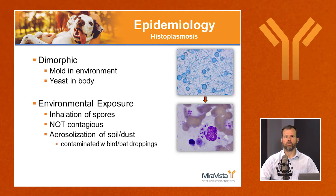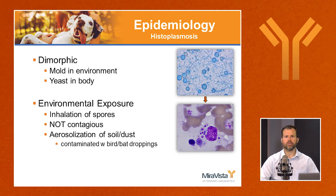Histoplasmosis is a dimorphic fungal organism. It is a mold in the environment and a yeast in the body, and it is not contagious — it's an environmental exposure. Those small spores are aerosolized and inhaled, which is where infection happens. The highest risk areas are dust and soil contaminated with bird and bat droppings, because these add nitrogen, organic matter, and acidity — the perfect environment for histoplasma to grow and sporulate.